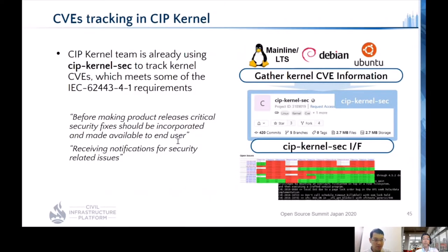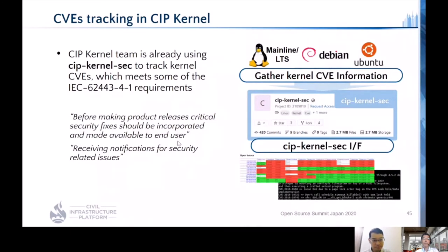As mentioned before, the CIP kernel team uses CIP Kernel SEC to track kernel CVEs that meet CIP kernel CVE requirements. By using the CIP kernel CVE tool, we can easily know the current kernel status regarding security issues, and we can fix kernel CVEs or verify after applying security patches to make sure our current kernel is secure.